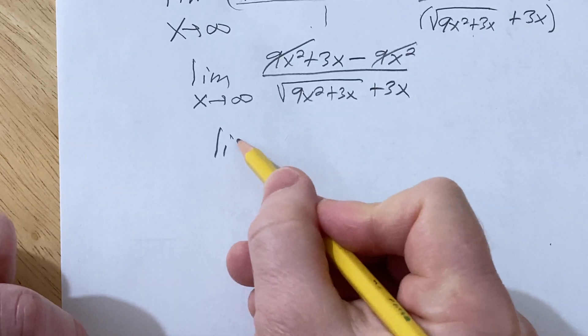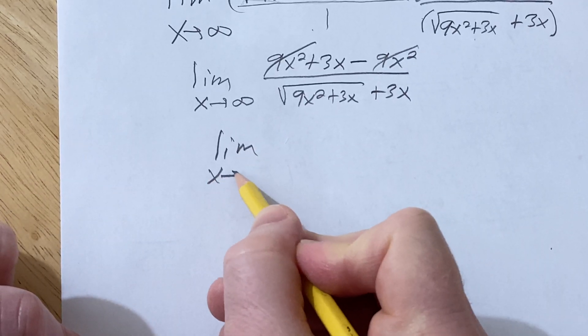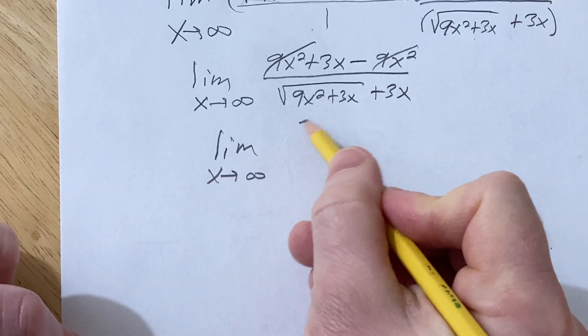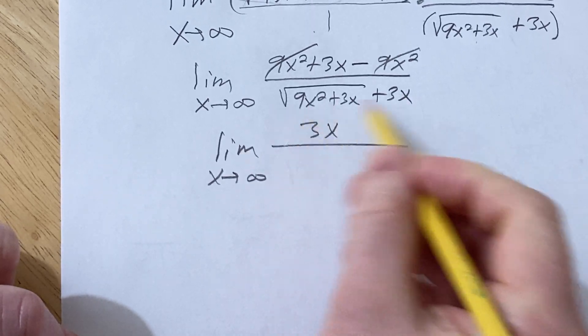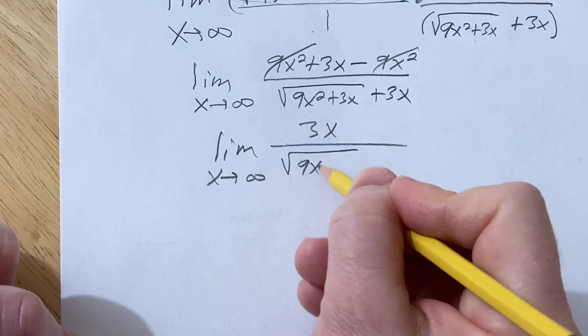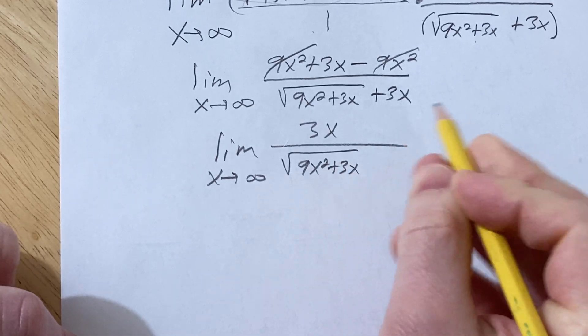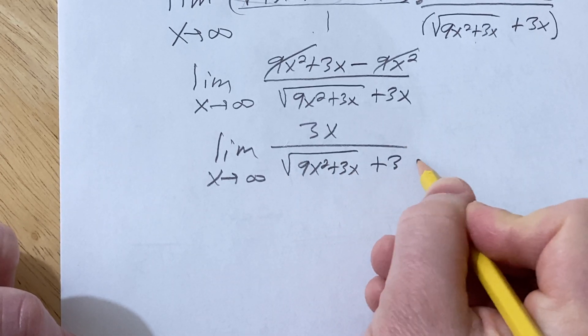So this is equal to the limit as x approaches infinity of 3x over, I'm just going to go ahead and write this again, square root of that plus 3x.